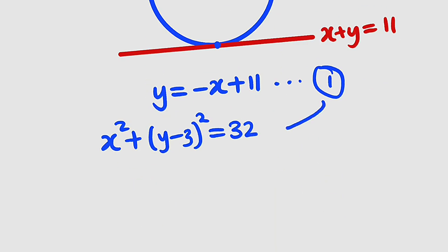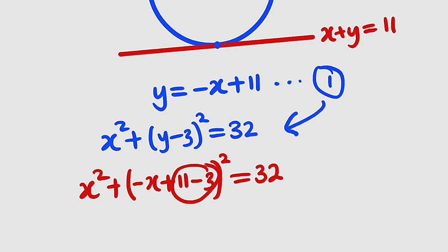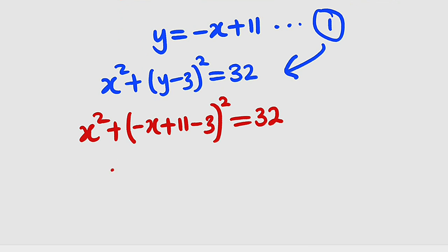If we plug this equation into this one, we have x squared plus y is now negative x plus 11, negative x plus 11, but we still have negative 3 here, negative 3 all squared. This is equal to 32. 11 minus 3 is 8, so our equation becomes x squared plus negative x plus 8 whole squared. Then I can subtract 32 from both sides, and this is equal to 0.